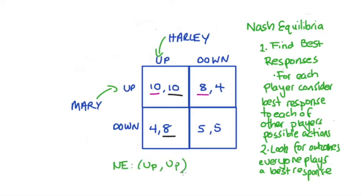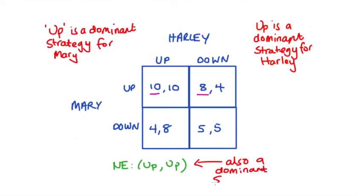We describe the Nash equilibrium by writing down player one's action and then player two's action in parentheses. Nash equilibrium is sometimes described as a situation where there is no possible unilateral deviation that is profitable from either player — neither player can increase their payoff by choosing an action different from the one they're currently doing. This is an equilibrium result because if we end up at this outcome it's very stable; no one has any incentive to change their behavior. Up-up also happens to be a dominant strategy equilibrium because up is a dominant strategy for both Mary and Harley, so when both players are playing up they're also both playing their dominant strategies.